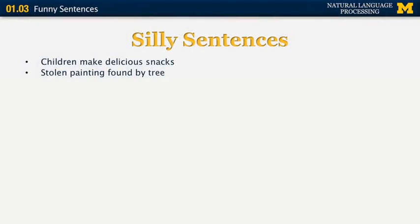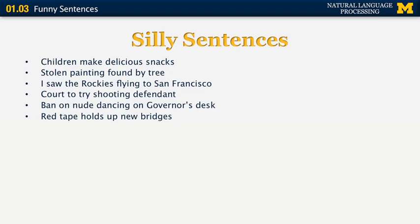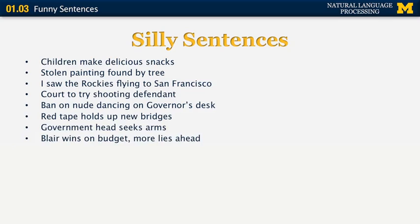Let me show you a few more sentences that have this kind of unintentional funny meaning. 'Stolen painting found by tree' — it's as if the tree found the painting. 'I saw the Rockies flying to San Francisco' — the funny interpretation is one where the Rockies are flying to San Francisco. 'Court to try shooting defendant' — instead of trying or putting on trial the defendant, we actually want to shoot him. 'Ban on nude dancing on governor's desk.' 'Red tape holds up new bridges.' 'Blair wins on budget, more lies ahead.'